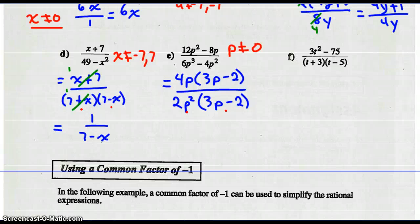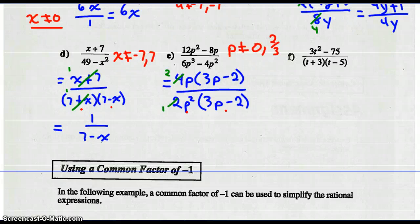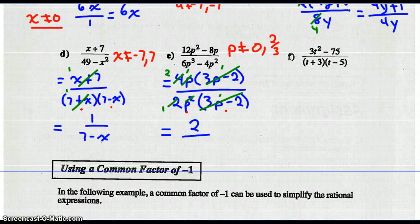So p can't equal 0, and p can't equal two-thirds. Now reduce: 4 and 2 are both divisible by 2, leaving 2 and 1. p squared and p are both divisible by p, leaving 1 and p. (3p−2) divided by (3p−2) leaves 1 and 1. So the simplest rational expression is 2 over p.